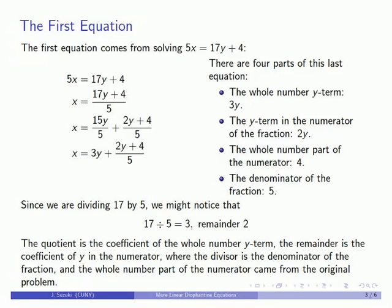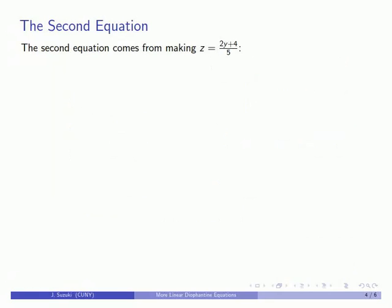This suggests that the pieces of this new equation come from performing a specific division. Let's see if we can get our second equation that way. Our second equation came from mandating that the fractional part, (2y + 4) / 5, should be a whole number. So we rearranged it: 5z equals 2y plus 4.